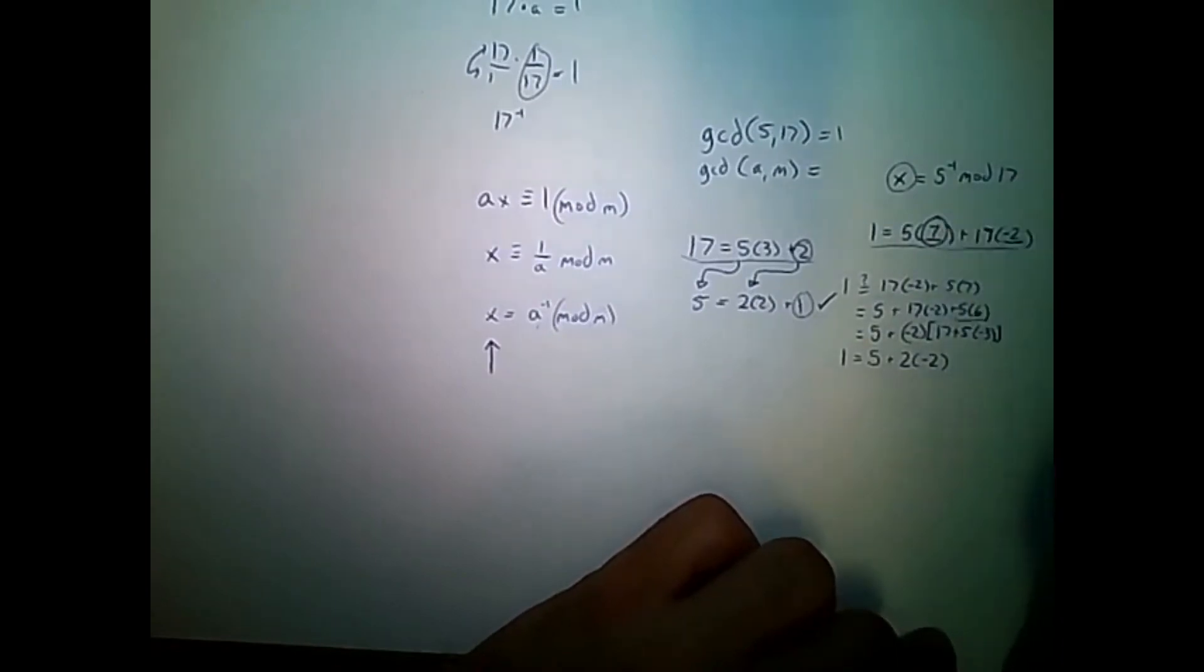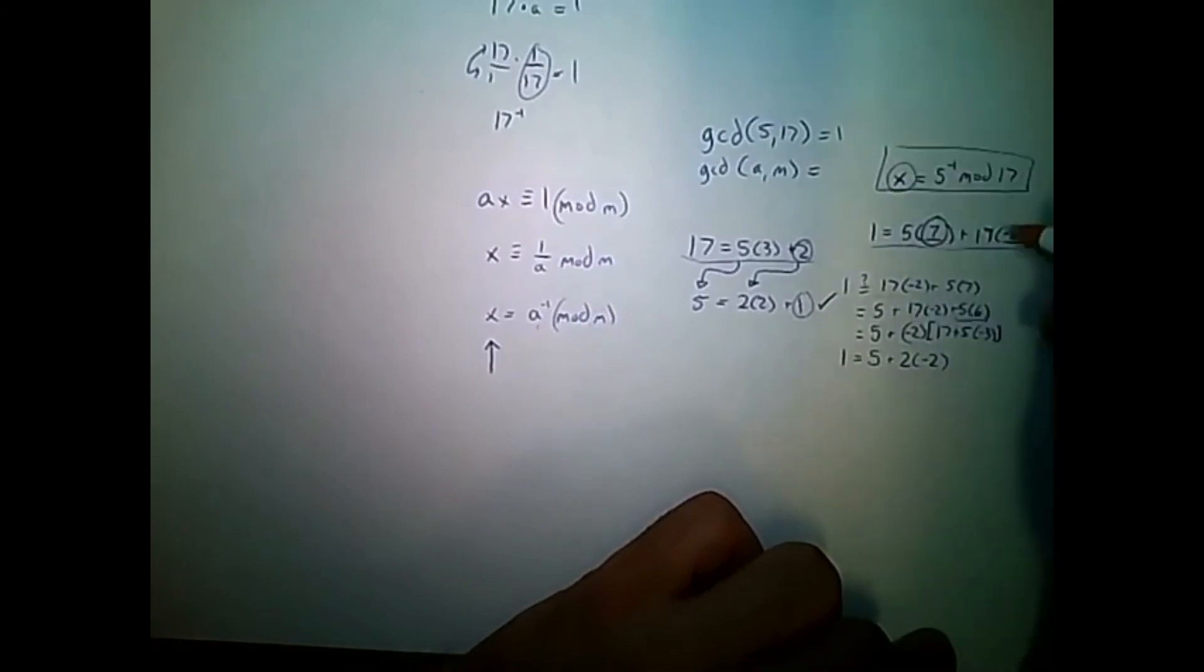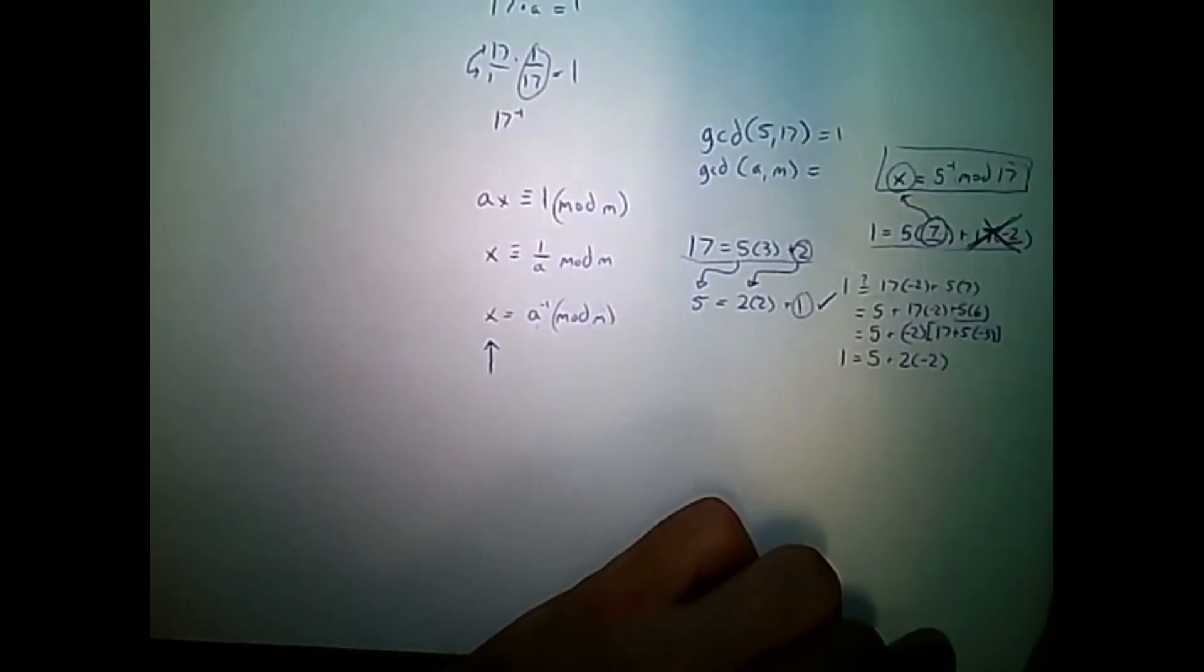So, that's the multiplicative inverse of this equation here. Now, you might be asking, what about this 17? We can actually just cross this off. Anything with 17 is going to divide evenly into 17 here. So, we can essentially ignore that.